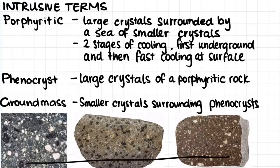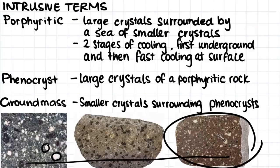Porphyritic texture means the rock has experienced two stages of cooling: first cooling underground where the larger grains formed, and then reaching the surface where it cooled quickly, making the remaining molten rock produce small crystal grains. Phenocryst is the word used to describe the large crystals of a porphyritic rock — we can see many phenocrysts here. The groundmass refers to the smaller crystals surrounding the phenocrysts; in this rock the red-coloured crystals are the groundmass.